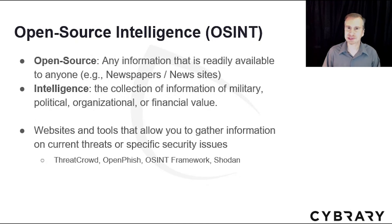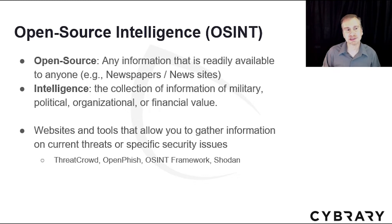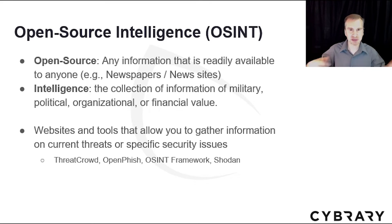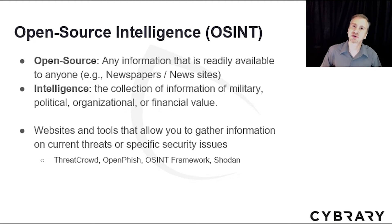As part of your threat analysis, you should be using open-source intelligence, also known as OSINT. Open source refers to any information readily available to anyone — newspapers, news sites. Intelligence is the collection of information of military, political, organizational, or financial value. Putting those two together means using open websites and open news sources to create your own intelligence. Websites and tools that allow you to gather information on current threats or specific security issues are shown on your screen.